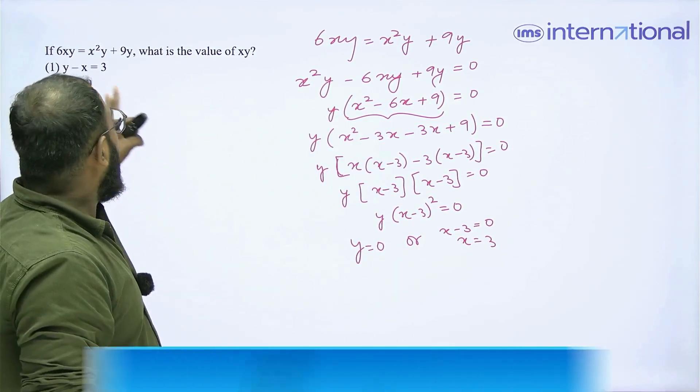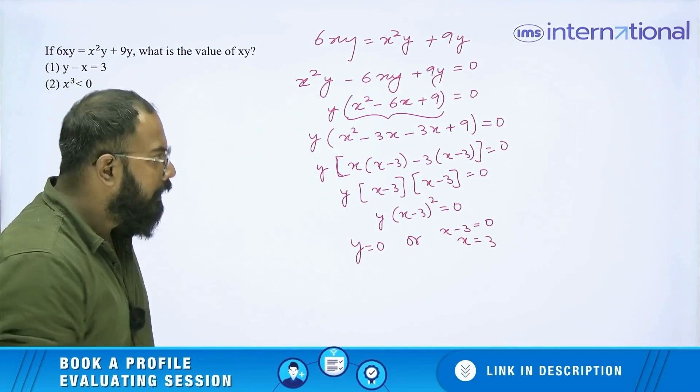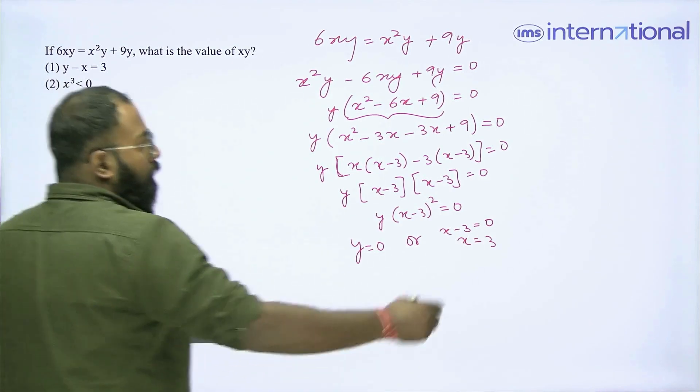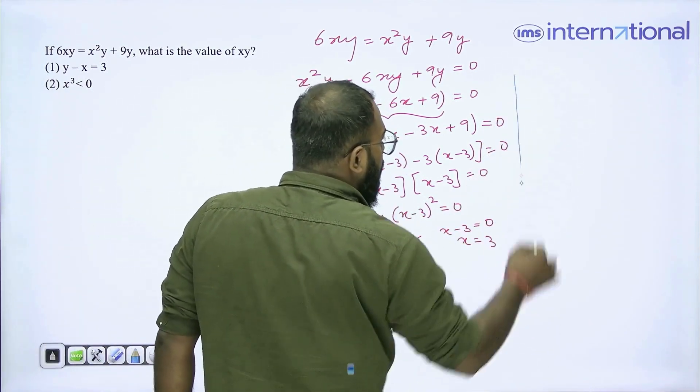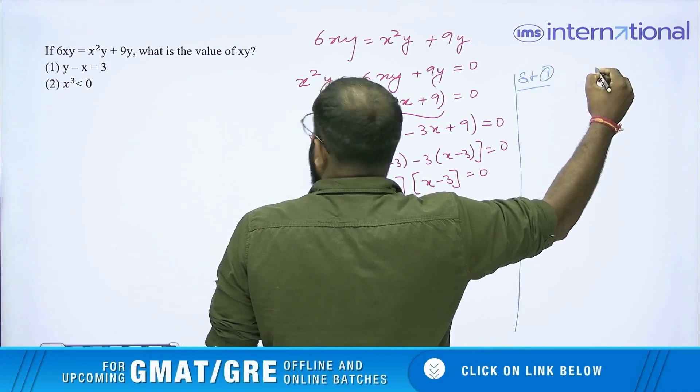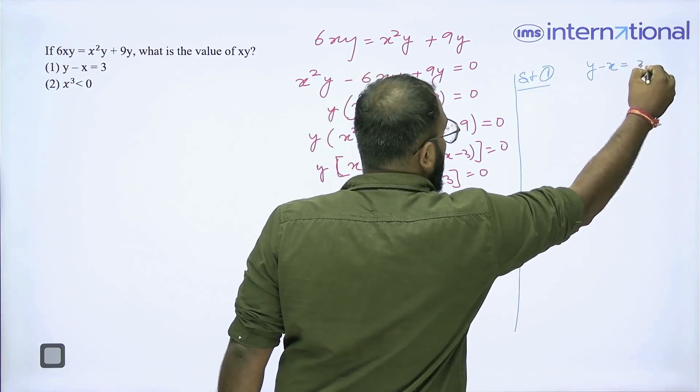Now let us use each of the statements and see whether we can find a solution or not. So, using statement 1, statement 1 says, y - x = 3, clear?